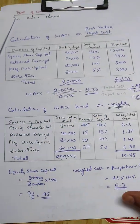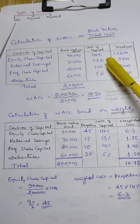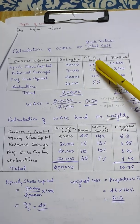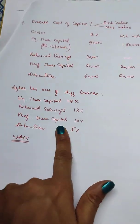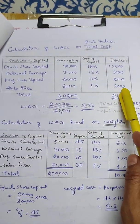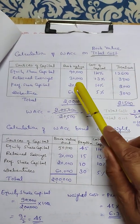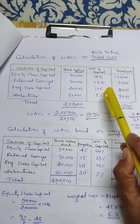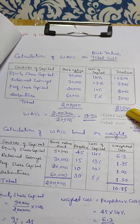The weighted average cost of capital can be calculated using two methods. For Method 1, using book value total cost: 14% of 90,000 equals 12,600. 13% of 30,000 equals 3,900. 10% of 20,000 equals 2,000. 5% of 60,000 equals 3,000.